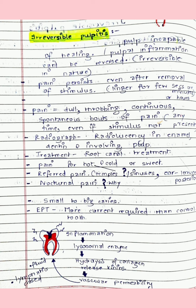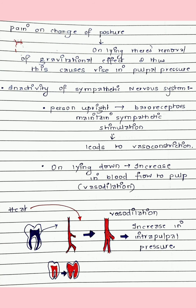The reason why there is pain in inflammation is that during inflammation, lysosomal enzymes are released, causing hydrolysis of collagen and releasing kinase, which in turn increases vascular permeability. There is increased fluid leakage and closure of lymphatics, so there is no drainage. The reason for nocturnal pain or pain on change of posture in irreversible pulpitis is: when a person is standing, there is a gravitational pull on blood; on lying down, this gravitational effect is removed, causing a rise in intrapulpal pressure.